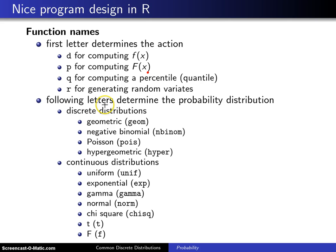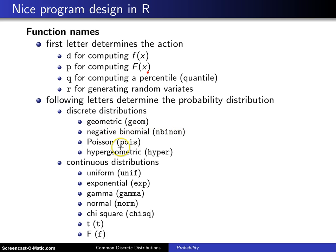Following that first letter are a bunch of other letters which will tell you the name of the probability distribution. You have seen binom for the binomial distribution, but there are other discrete distributions that are built in, such as geom for the geometric, nbinom for the negative binomial, pois for the Poisson, hyper for the hypergeometric, and there are others.